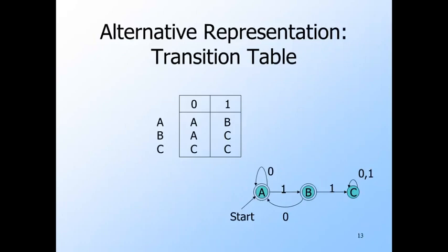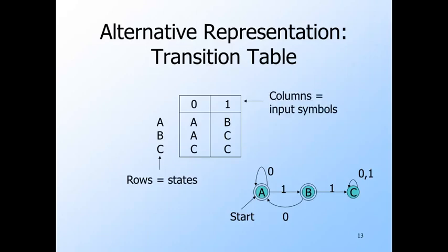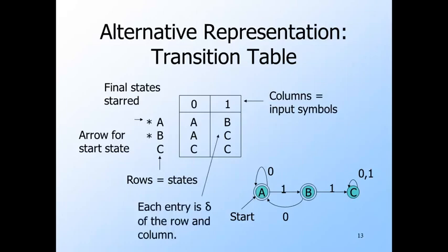We can also represent automata by tables. Here's our example automaton for strings without consecutive ones shown as a transition graph, and also as a table. The rows each correspond to one of the states, and the columns correspond to the input symbols. We indicate final states by putting a star next to their name, and the start state is indicated by an arrow. The entries of the table are the values of the transition function applied to the state of the row and the symbol of the column. For example, the entry in the row for state B and the column for input symbol one is C, because delta(B, 1) = C.